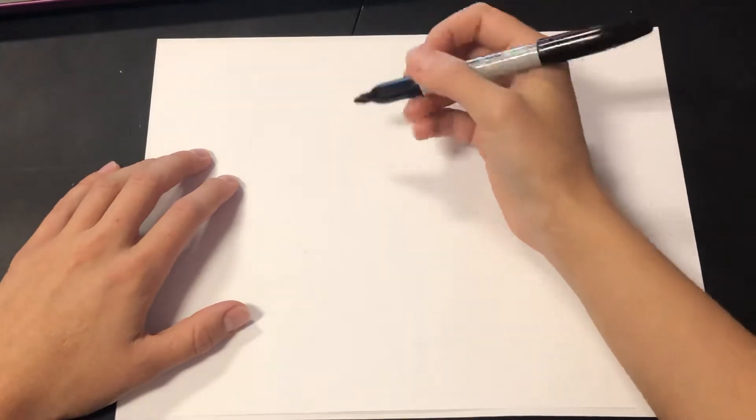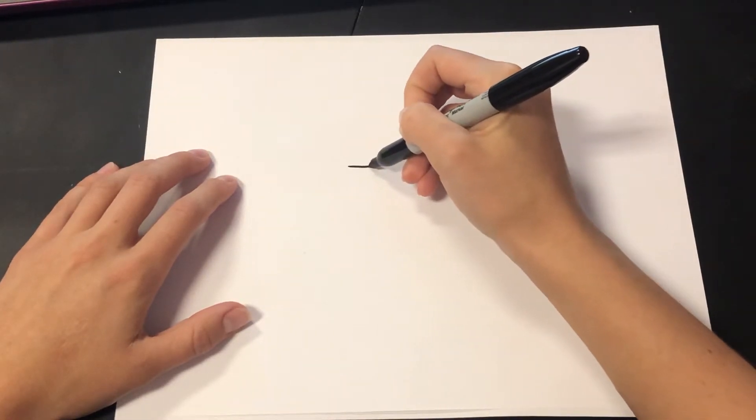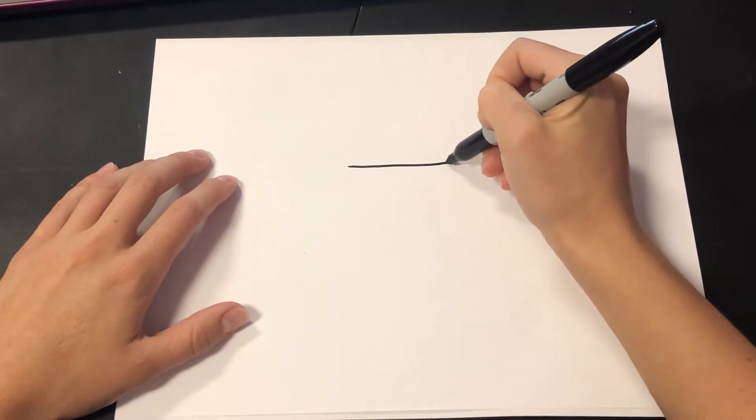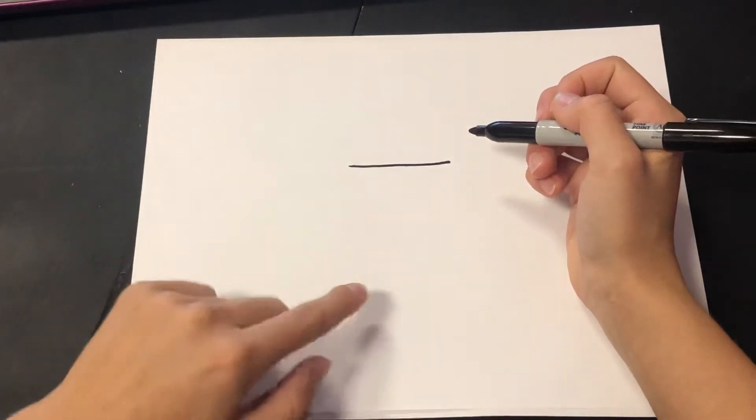We're going to start off by drawing the cup that will hold our fruity drink. So we're going to start with a line right about here on our page, and I'm going to do some shapes on either side first.